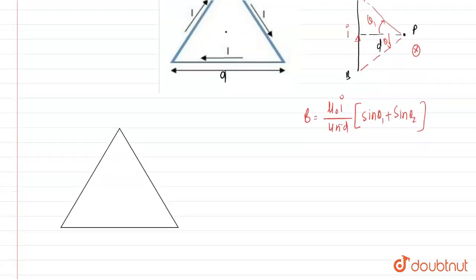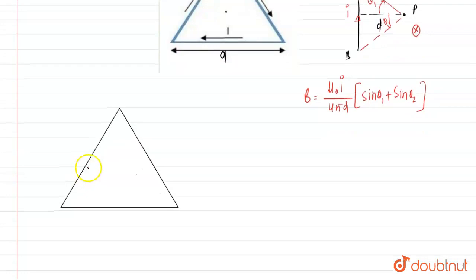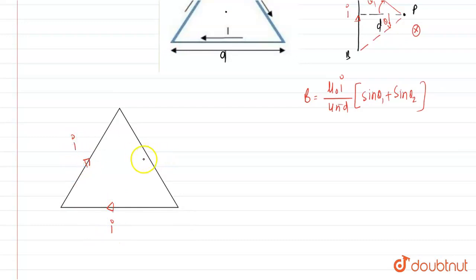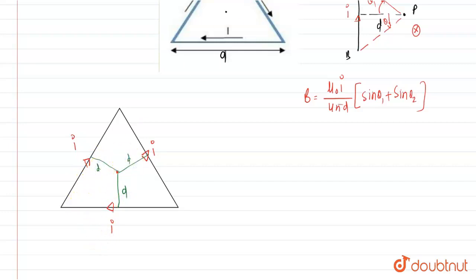Using that formula, we will find the magnetic field at the center of the triangle. The current of magnitude I flows through the wire. The center O is equidistant from all three sides — let that perpendicular distance be D. All three distances are equal to D. The triangle is equilateral, so the angle at each vertex is 60°.